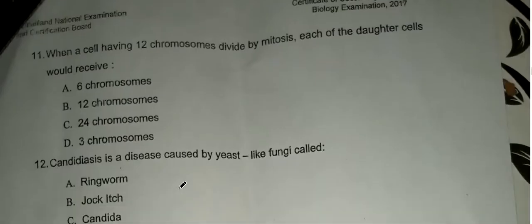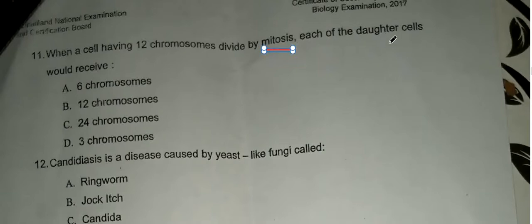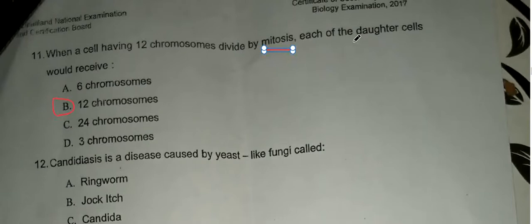When a cell with 12 chromosomes divides by mitosis, each daughter cell receives the same number of chromosomes. Each daughter cell gets a full set from the mother cell.